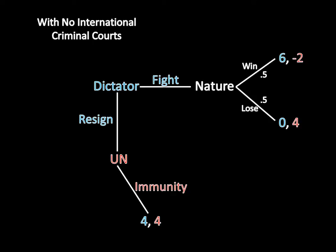How do we solve this game? There's really only one strategic move here. The United Nations doesn't have a strategic move — it just has to make the immunity choice. The only real choice is whether the dictator should fight or resign, and that's going to be based on what happens in the fight outcome. In the fight outcome, nature chooses whether he wins or loses. He wins with probability 0.5, and he gets 6 if he wins.